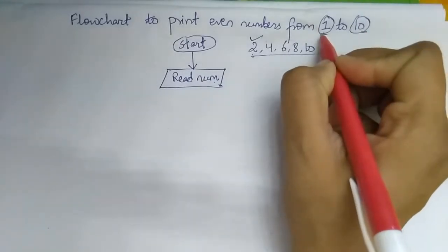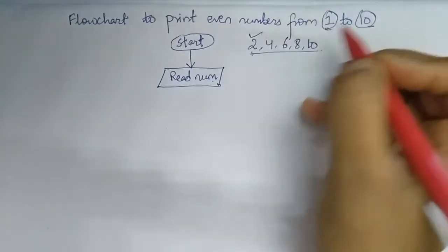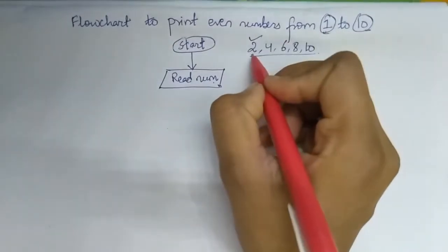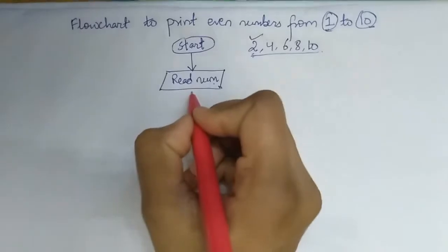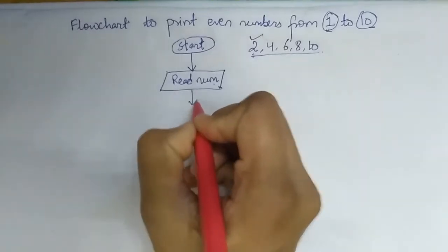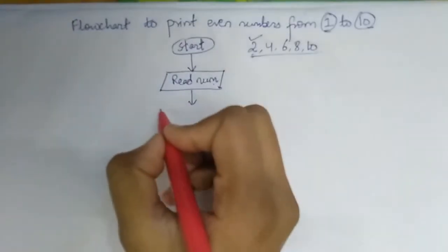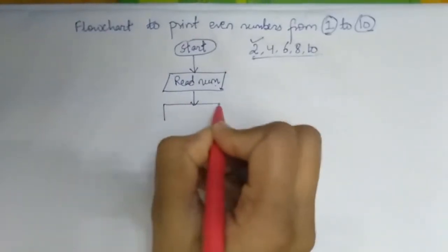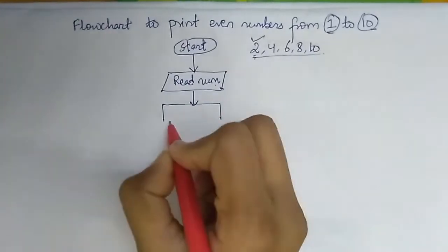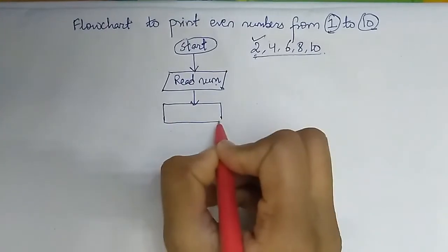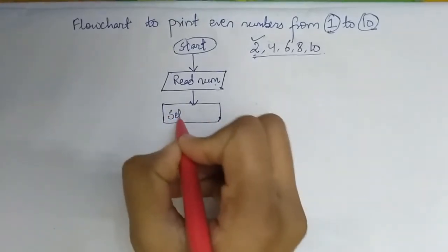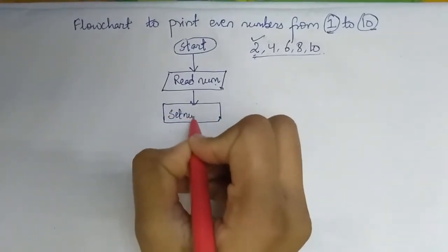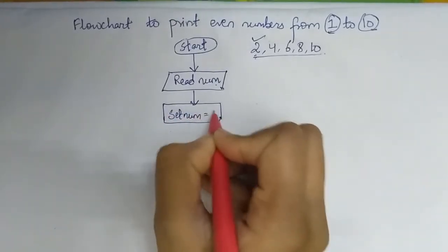Though the question asks from 1 to 10, since 1 is an odd number, the first even number will be 2. So we have to initialize the value of num equal to 2 — set num = 2.